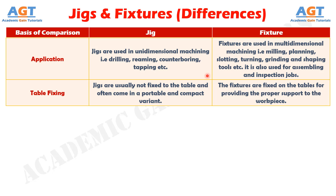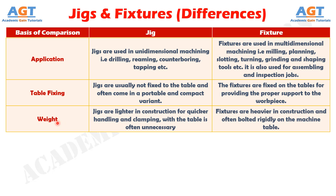If we differentiate them based on table fixing, jigs are usually not fixed to the table and often come in a portable and compact variant, whereas fixtures are fixed on the tables for providing proper support to the workpiece. Based on weight, jigs are lighter in construction for quicker handling and clamping with the table is often unnecessary, whereas fixtures are heavier in construction and often bolted rigidly on the machine table.